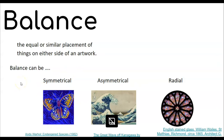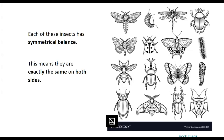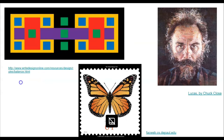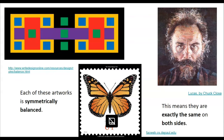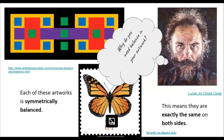Each of these insects has symmetrical balance, meaning they're exactly the same on both sides. We also see symmetrical balance in each of these artworks, and that again means they're exactly the same on both sides. Why do you think that balance is important? Why do you need it in your work?